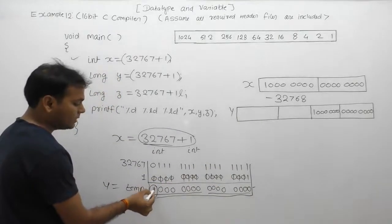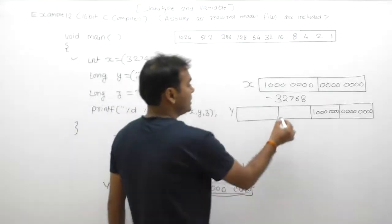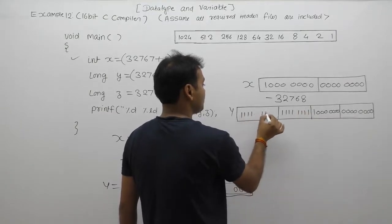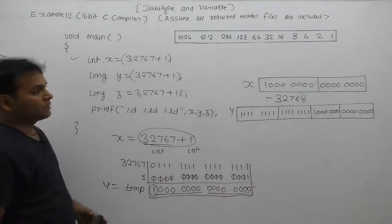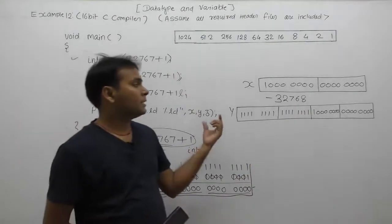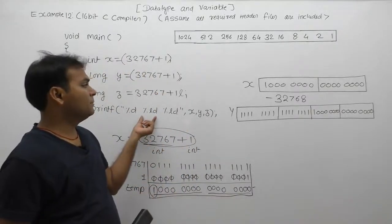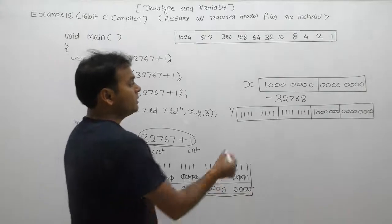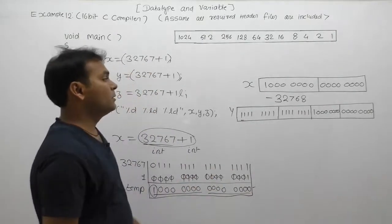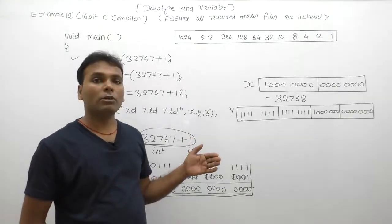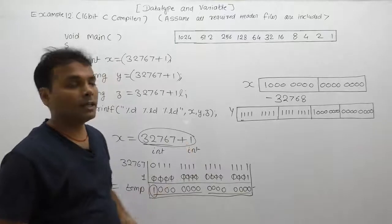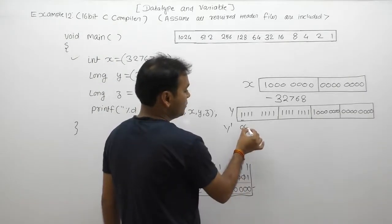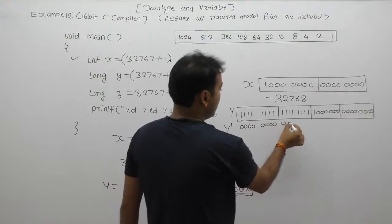The sign bit is 1, so remaining default values carry sixteen times 1 — sixteen times 1 like that. Now to find the decimal number for y, we check the sign bit: sign bit is 1, so the number is negative. To calculate the decimal number, we first need to find two's complement. For two's complement, first find one's complement: eight times zero, again eight times zero.